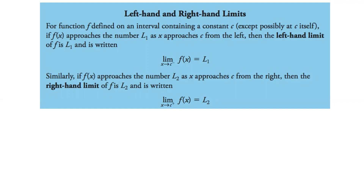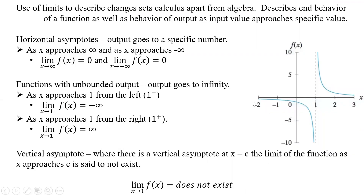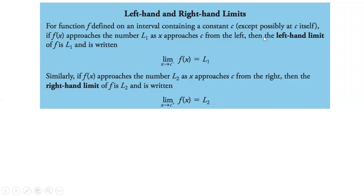We have a function f defined on an interval containing a constant c, except possibly at c itself. If f(x) approaches the number L1 as x approaches c from the left, then the left-hand limit is L1. In our example, the limit of f(x) as x approaches 1 from the left was equal to negative infinity.